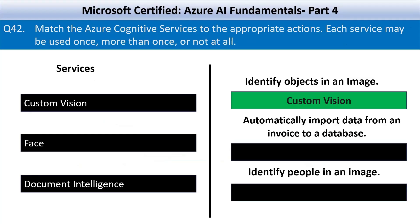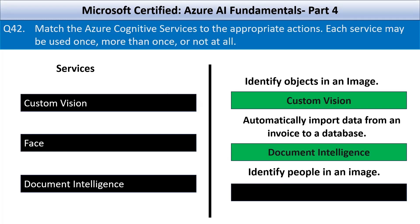The next action is: automatically import data from an invoice to a database. Document Intelligence extracts structured data from documents like invoices, receipts, and forms, making it ideal for automatically importing invoice data into databases.